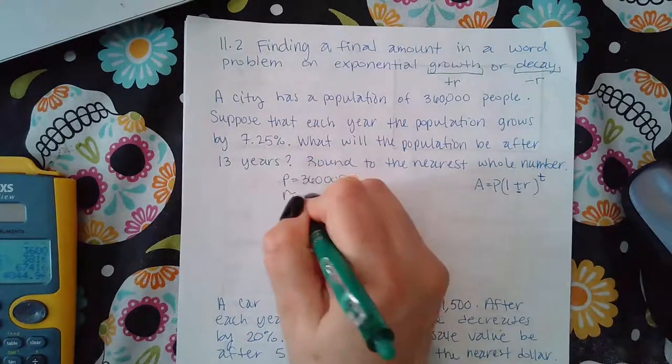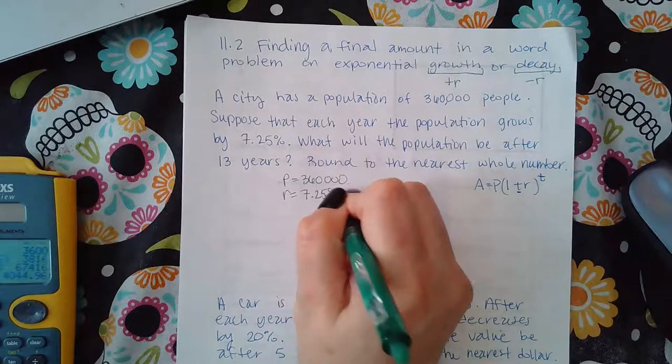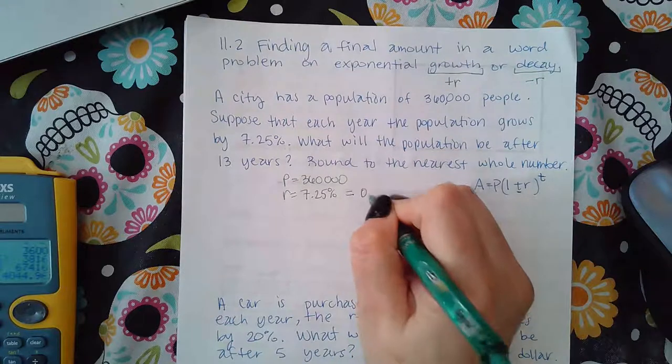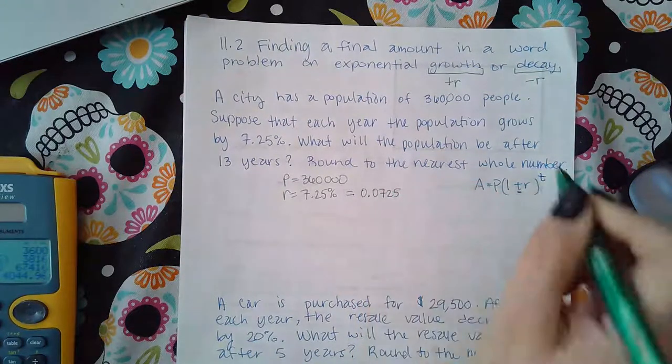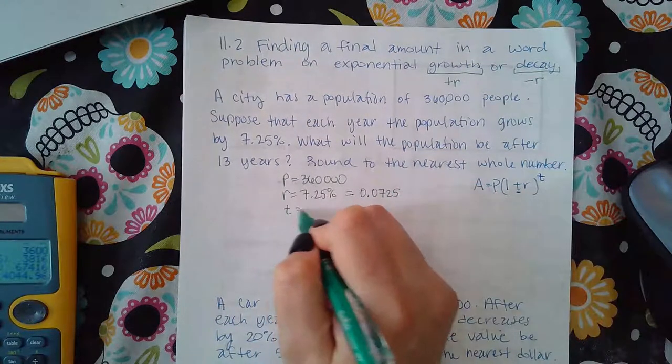Then, my rate is this 7.25%. But as a decimal, that's 0.0725. And then, it tells me the years is 13.